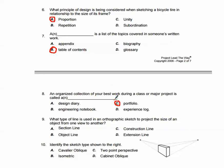Number seven, a blank is a list of the topics covered in someone's written work. A list of topics would be a table of contents. Number eight, an organized collection of your best work during a class or a major project is called a what? What you would actually be submitting there is a portfolio, and that's where you submitted when you did the Puzzle Cube project.